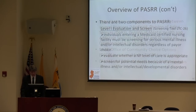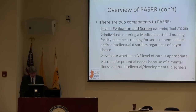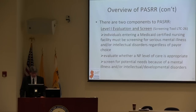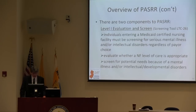The Level 1 screen has two aspects: determining whether an individual meets the level of care required by a nursing facility, and screening them for serious mental illness or an intellectual and developmental disorder. If they screen positive, they are required to proceed to the Level 2 evaluation. Both the mental health and developmental disabilities divisions have separate processes and make that determination based on their evaluation.